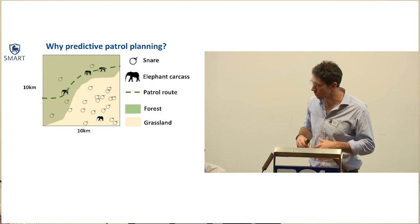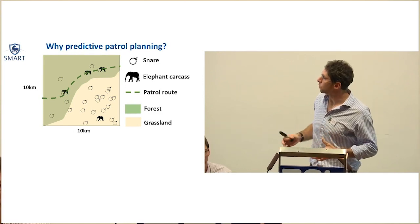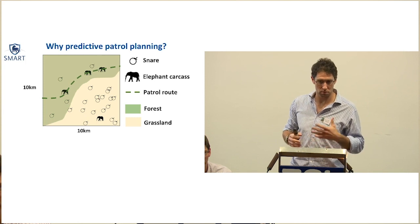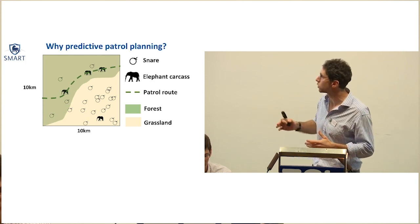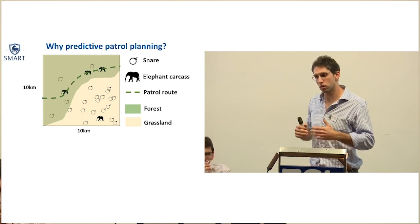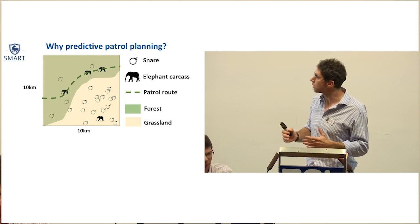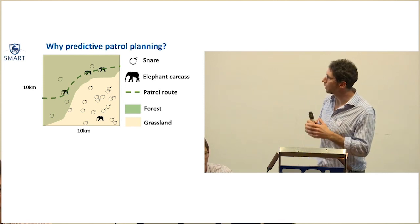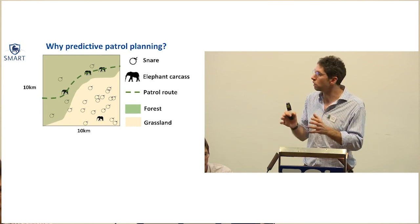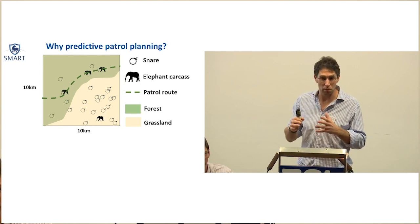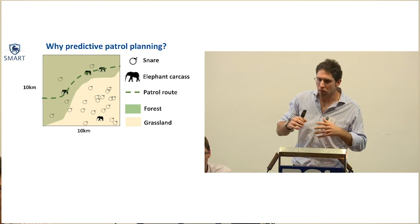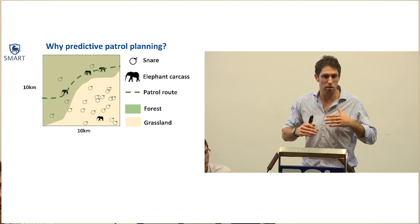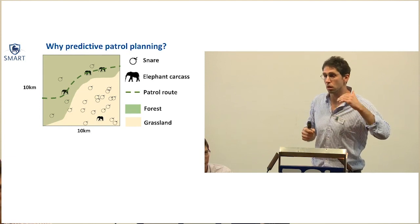That's a bit of background about the SMART software, what kind of data it contains and what we want to use it for. This is about predictive patrol planning, which will often involve quite sophisticated data analysis, modeling techniques, and AI, in order to improve the quality of guidance that we can feed back to rangers and managers. One obvious question would be: why do we need to do this, given that we already have ranger data which tells us where activities are? The simple answer is that even the very best ranger patrol data contain biases.